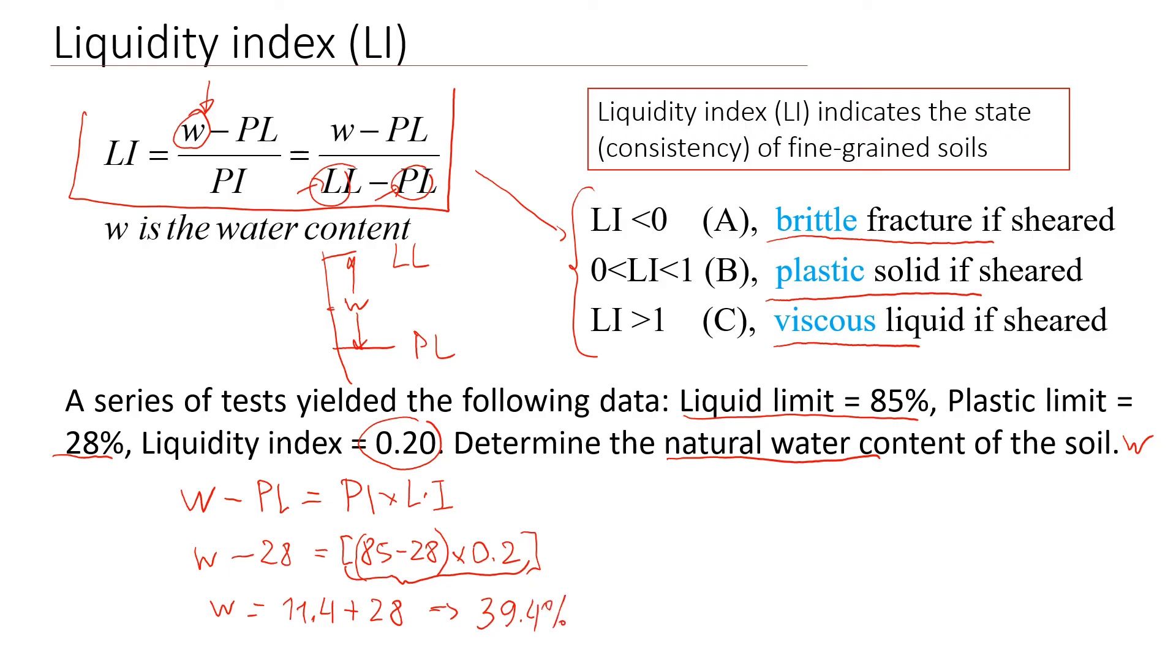So what we get from this exercise, we estimated the natural water content. So this is 39.4%. So I'm talking about this value here. Okay, so that's how it is used. Not that difficult, pretty straightforward. It just, we need to know a natural water content, plastic and liquid limit of the soil. And then we can estimate liquidity index. Thanks for watching this video. Have a nice day. Bye.